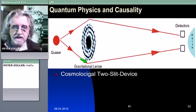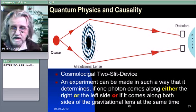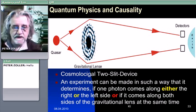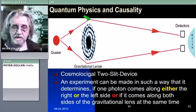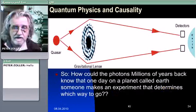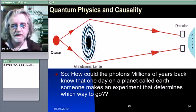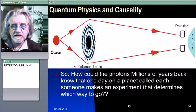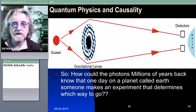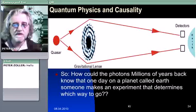Which means the detectors or filters could be put in front of the detectors in a way that it determines if one photon comes along either the right or the left side, this is the particle behavior, or it comes along both sides, this is kind of wave behavior at the same time. But the problem here is: how could the photons millions of years back know that one day on planet Earth, someone makes an experiment that determines which way to go? So here we influence the past, not only a few milliseconds, but the past millions of years away.